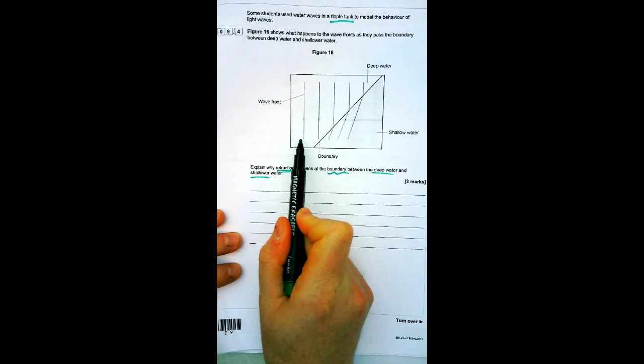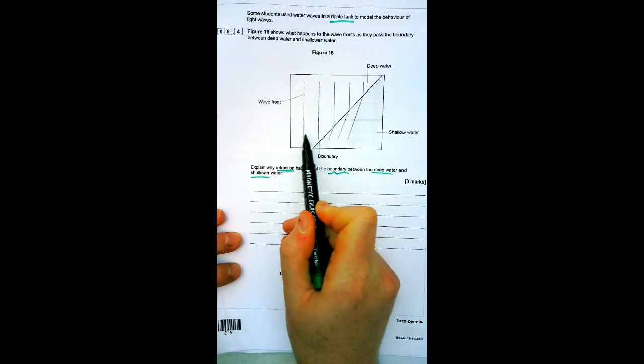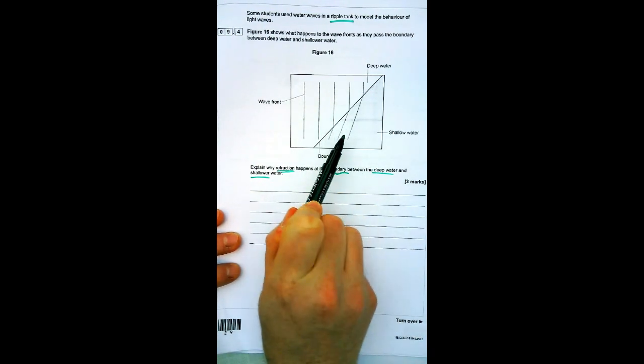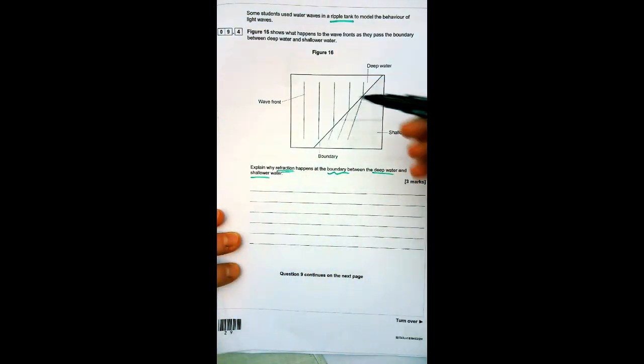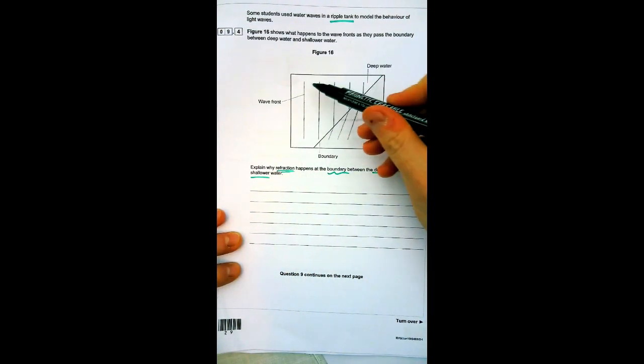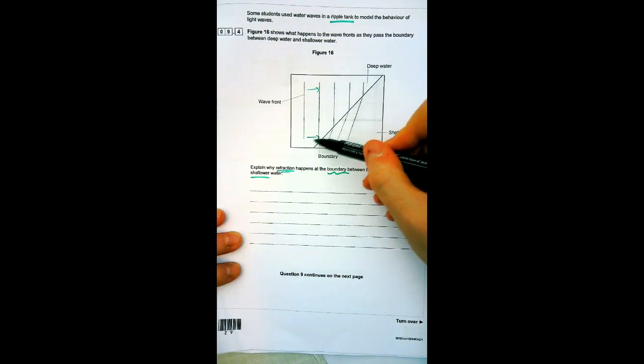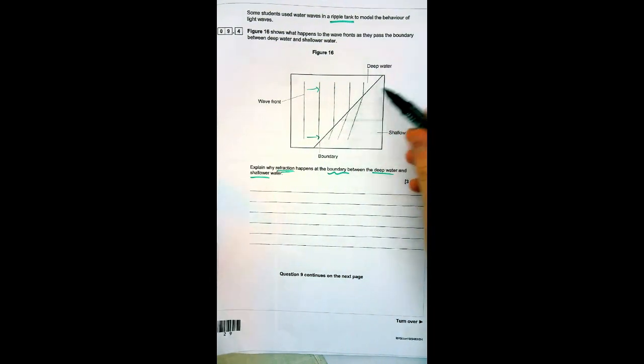These are wave fronts, like ripples as they go along. You'll notice as soon as they reach shallow water they start to change direction. Let's explain it. It should be obvious that the side that hits first would be this one, just because of the angle.